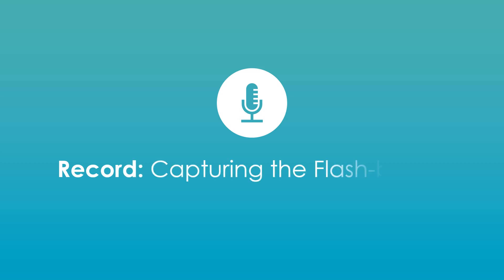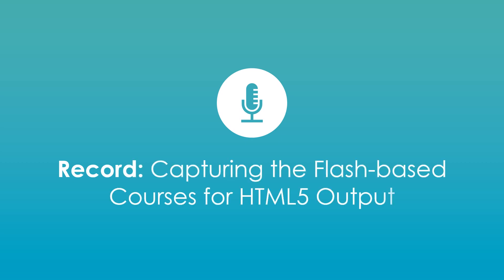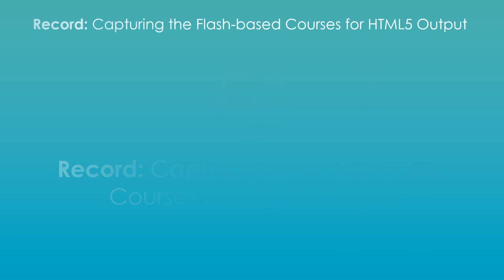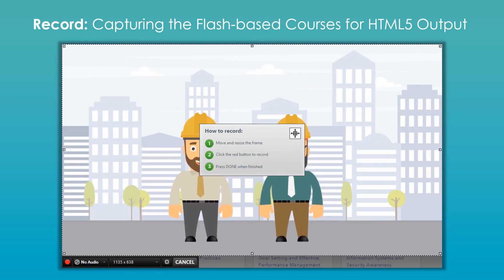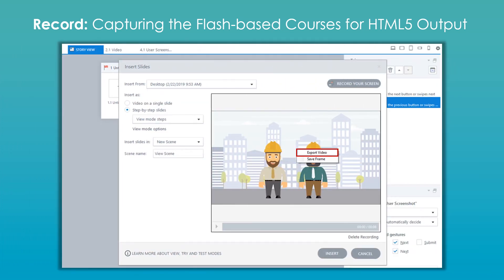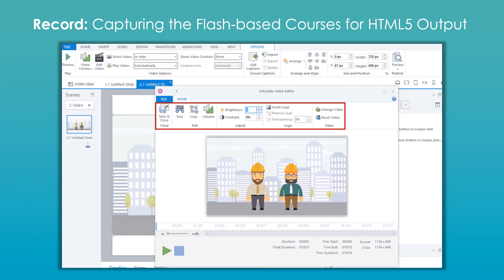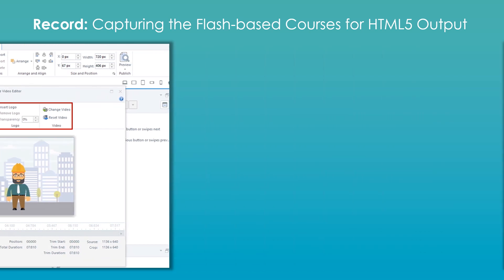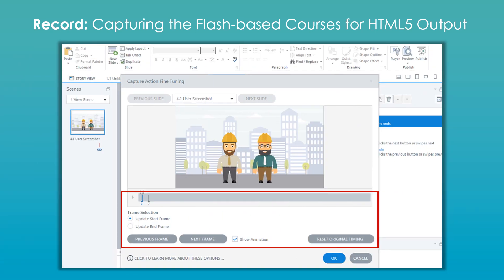Record: Capturing the Flash-based courses for HTML5 output. You have a Screen Recording option in Storyline 360 which can be used to capture the screens of your existing Flash-based eLearning courses. Once the existing course is recorded, it can be published as a single MP4 video file format. Additionally, it also allows for fixing mistakes, making edits, as well as changing the first and last frames of the screen recording.